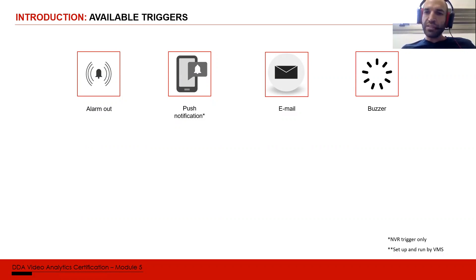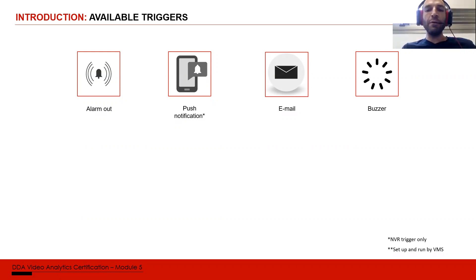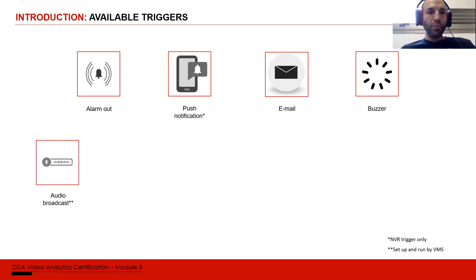Buzzer can be a local buzzer on the NVR — it's a buzzer connected to the NVR PCB making a buzzing sound. It can also be an audio file played by the VMS locally to notify the operator that something is happening. Audio broadcast is supported only by the VMS at the moment — we can broadcast any audio file we upload through the audio out of IP cameras or NVRs.